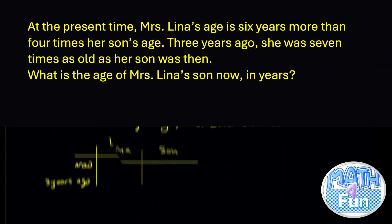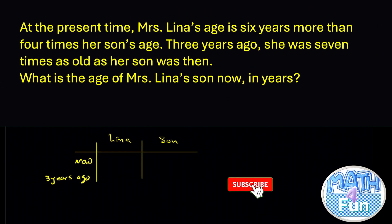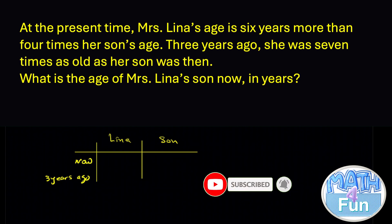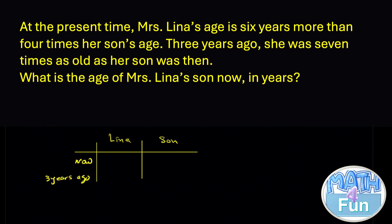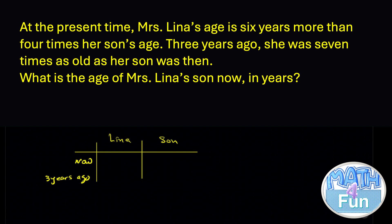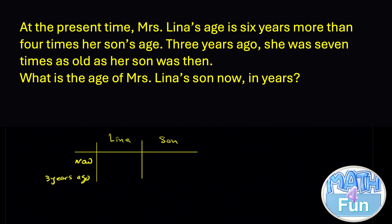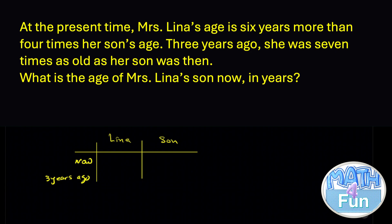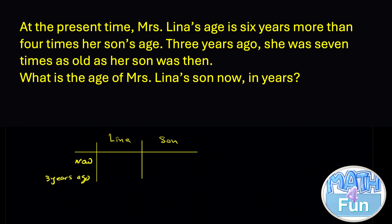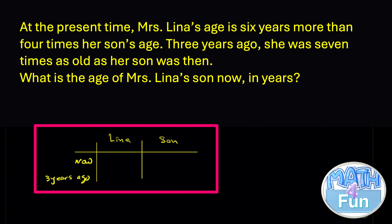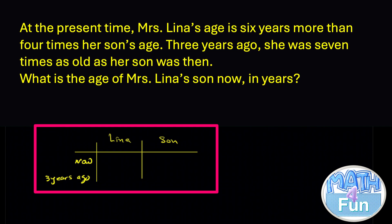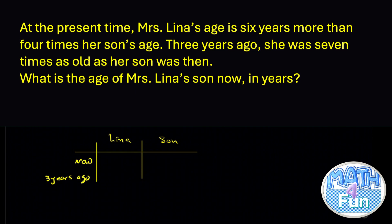Here's a nice question that always appears on the MSAT exam — students report frequently encountering age word problems. At the present time, Mrs. Lina's age is 6 years more than 4 times her son's age. Three years ago, she was 7 times as old as her son was then. What is the son's age now? I translate these problems into a table to summarize the ideas visually.